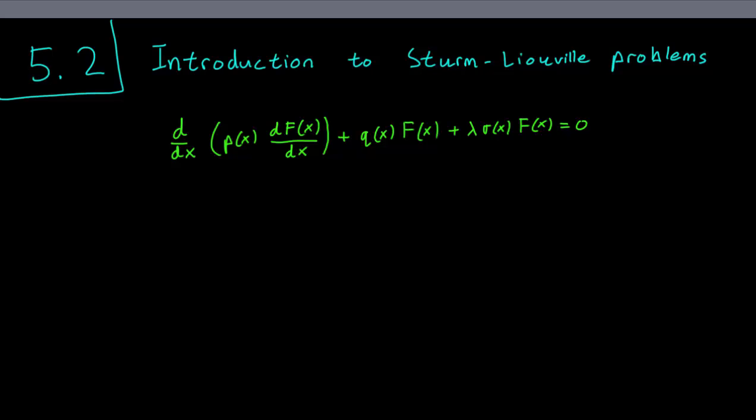But first, let us talk about how we can get our original boundary value type problem. If we set p(x) as just a constant function 1, q(x) as 0, and sigma(x) as another constant function 1, what we obtain is the derivative of the derivative of F, so the second derivative of F.